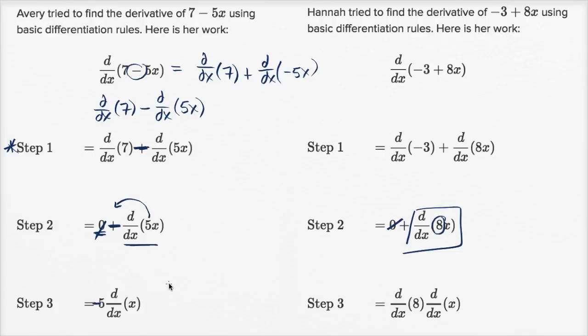Avery had made a mistake at step one, but this is actually going to be equal to - the derivative of a constant times an expression is equal to the same thing as the constant times the derivative of the expression. So this would have been the correct way to go. And then the derivative of x with respect to x, well that's just going to be 1. So this should have all simplified to 8.